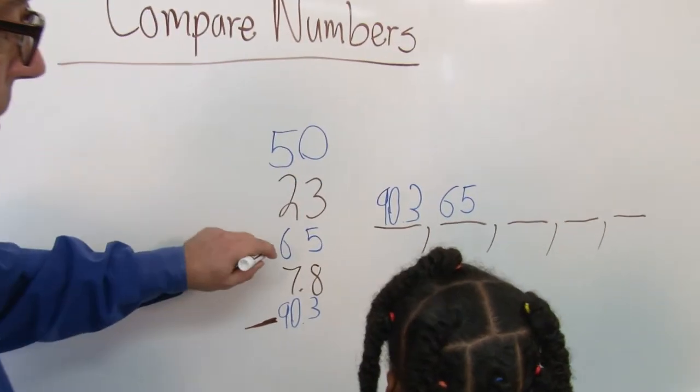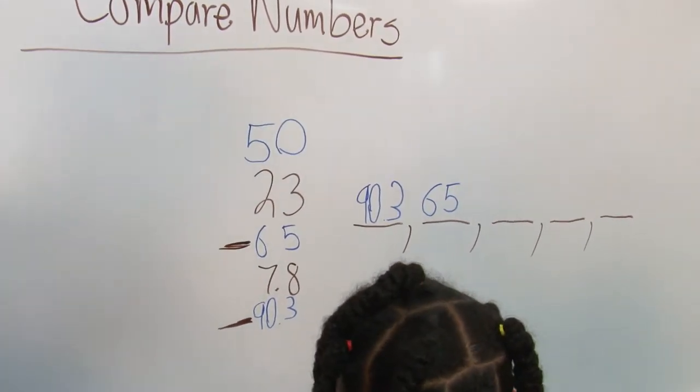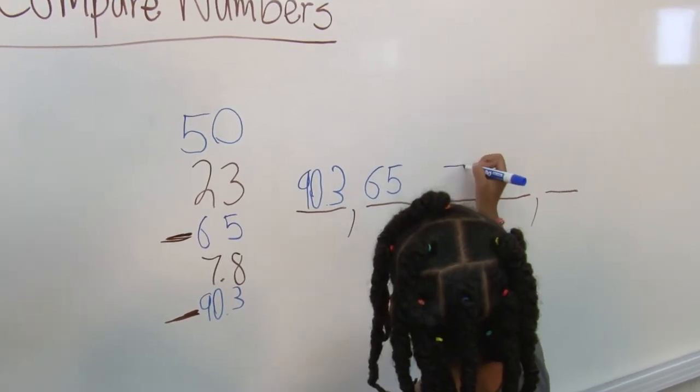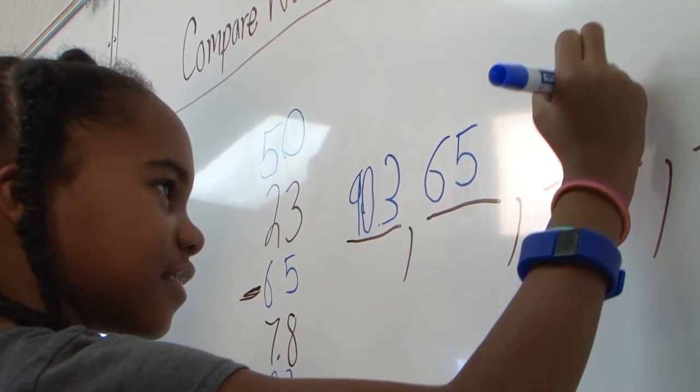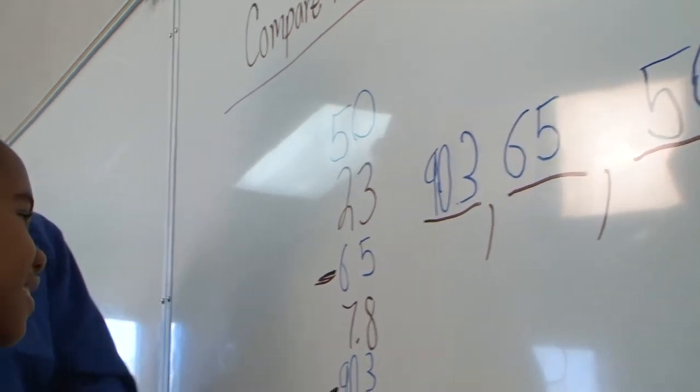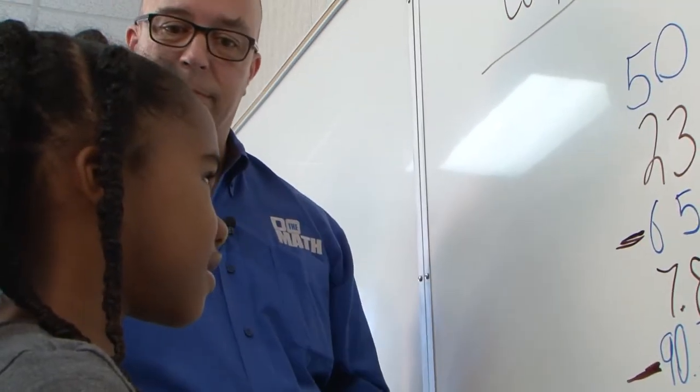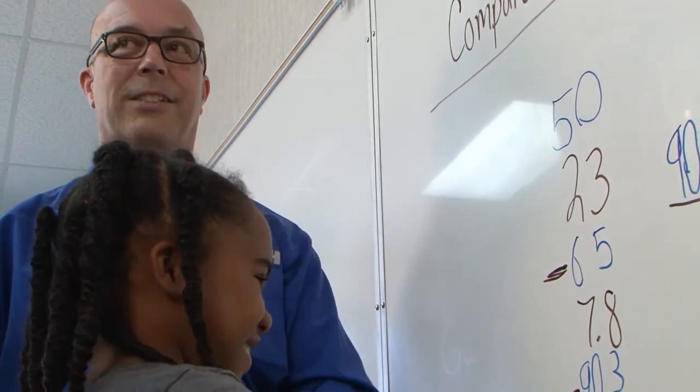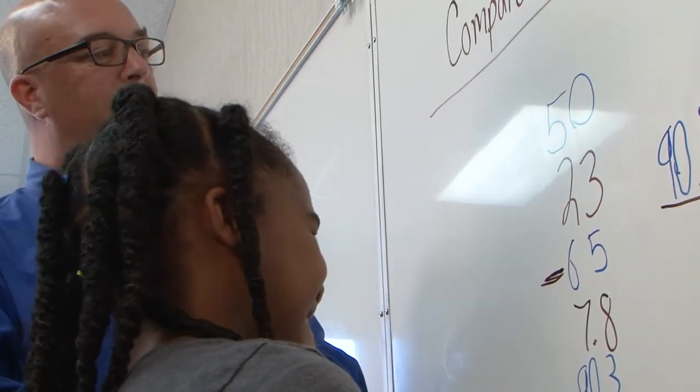So, you're going to go with 65 next? Yes. Okay. What's next? You sure? Because once again, 7 is bigger than 5. Yes, but this is a two-digit number. Same thing. Same thing, huh? Alright. Got 50 out of the way.